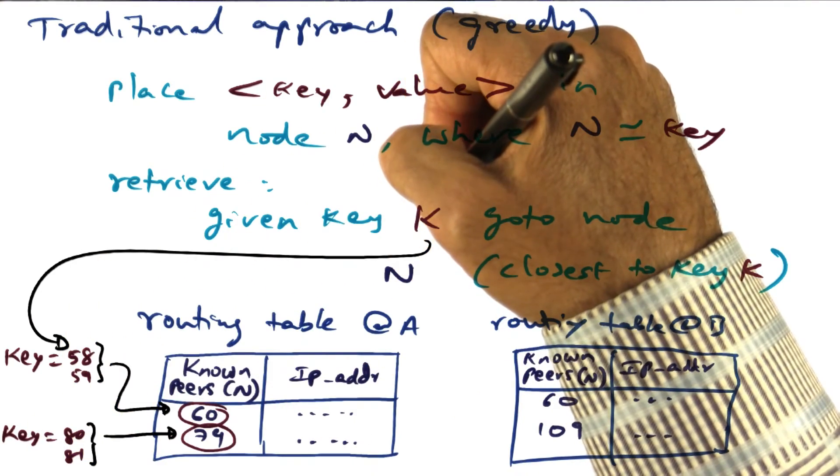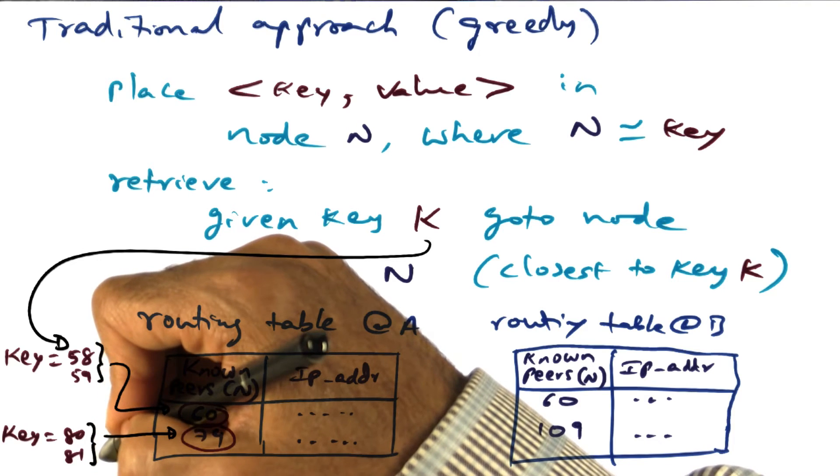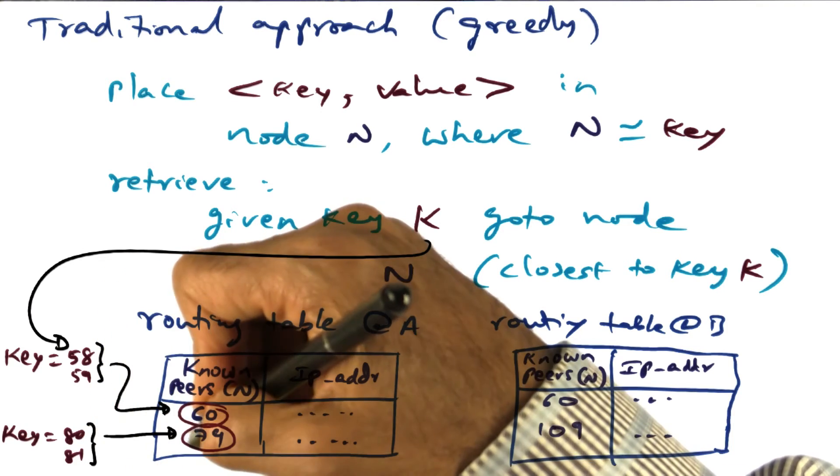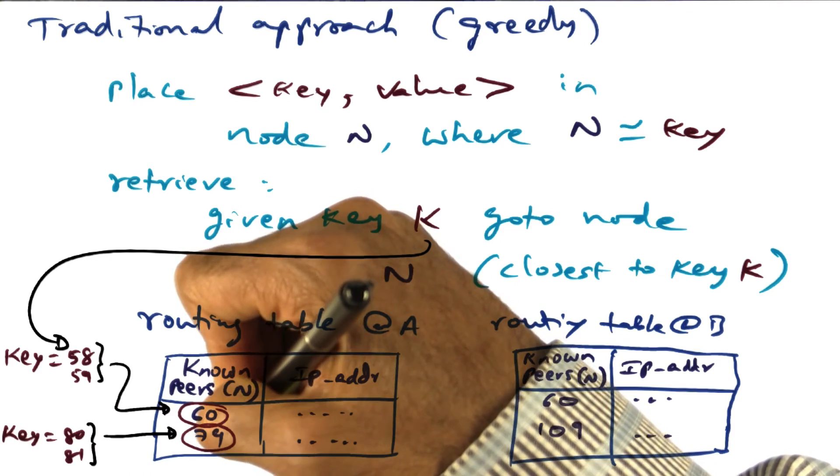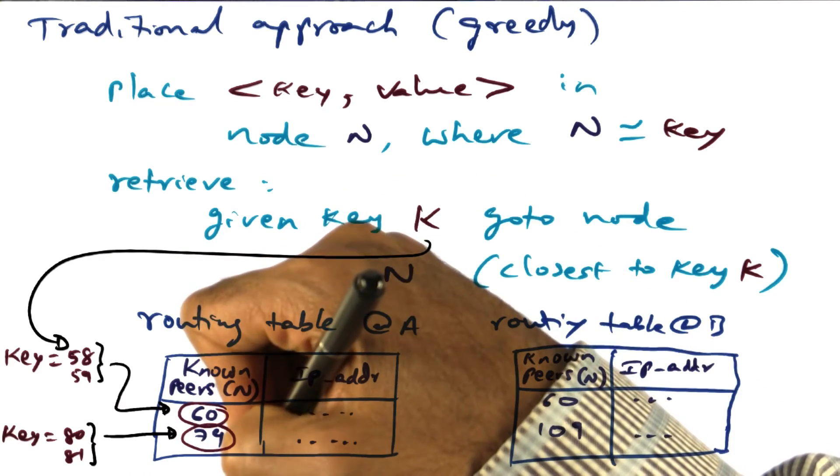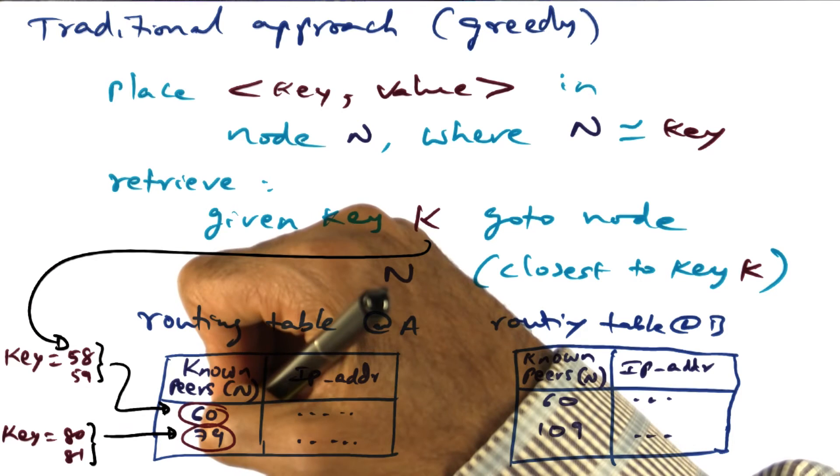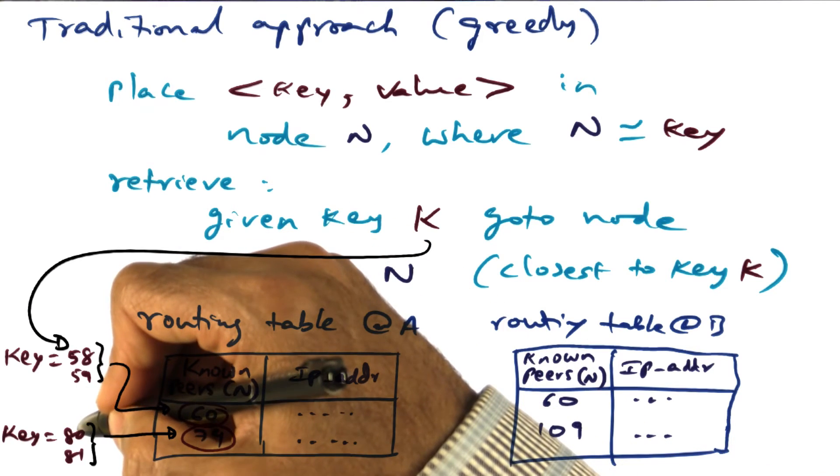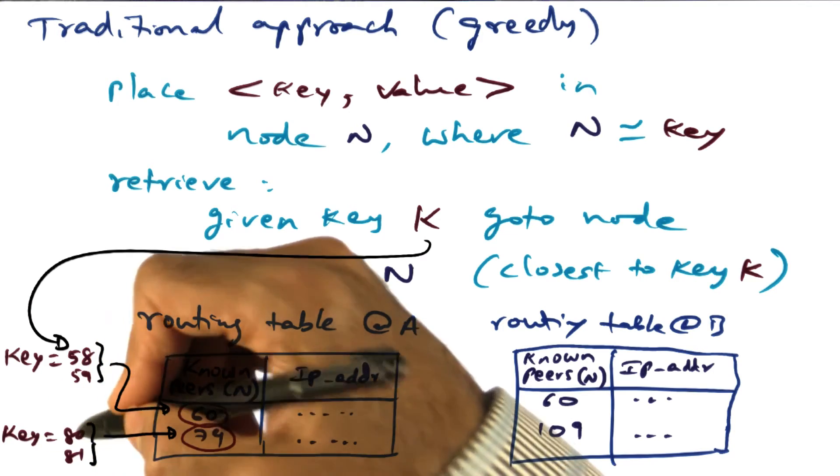On the other hand, if the key that I'm looking for is 80 or 81, then I'll say well, chances are this key is stored in node ID 79 for whom I have a mapping. Or if I go to him, he might know how to get to node number 80, which may be actually storing this key 80.